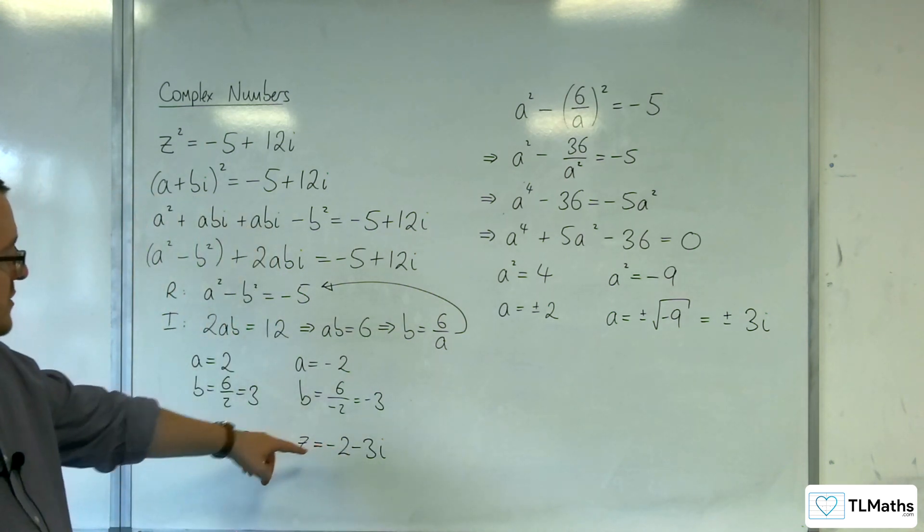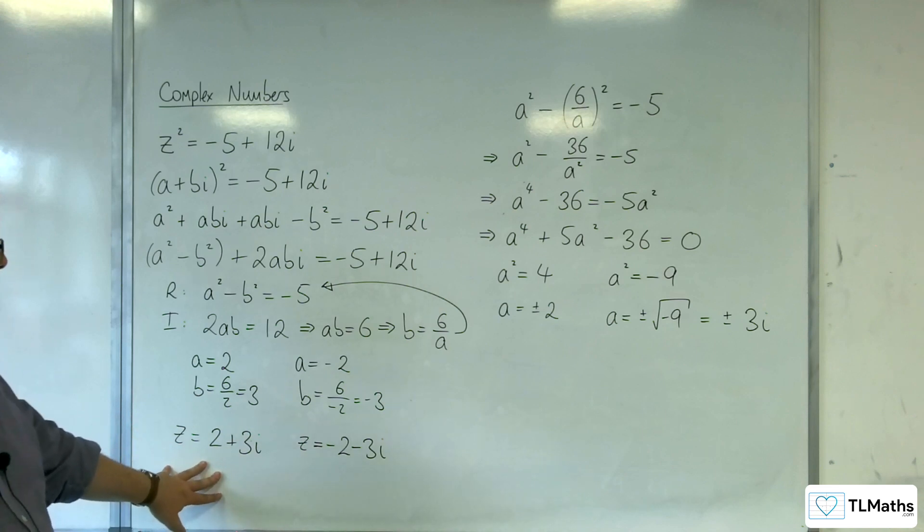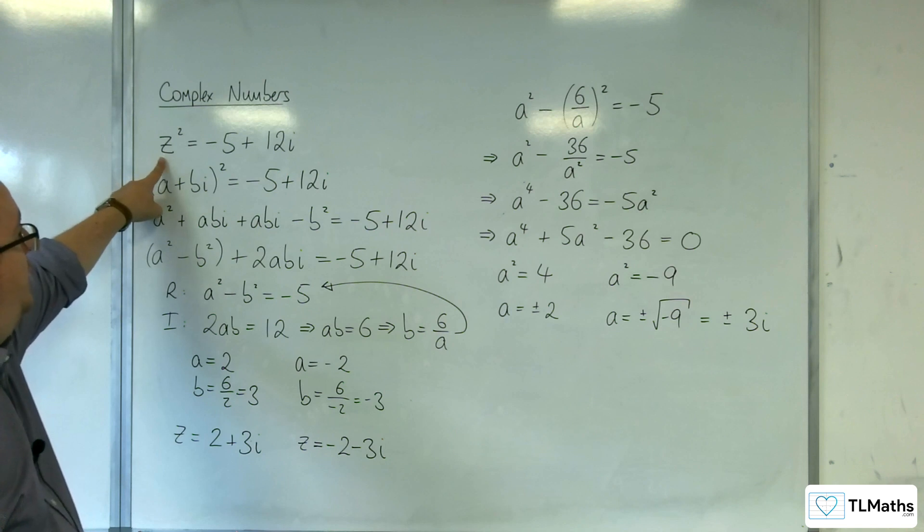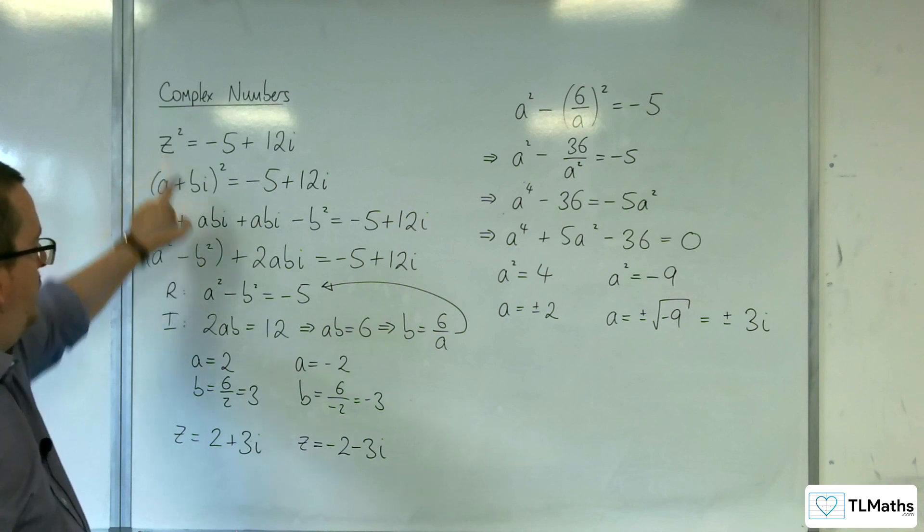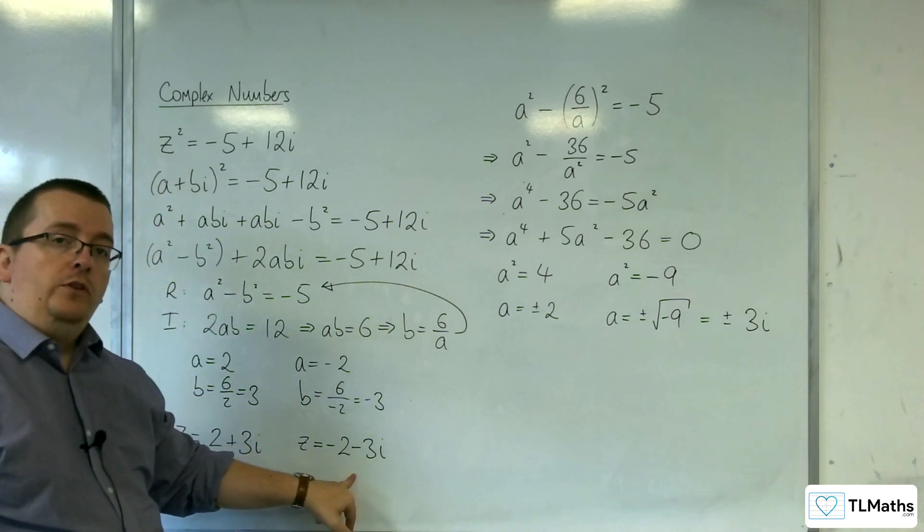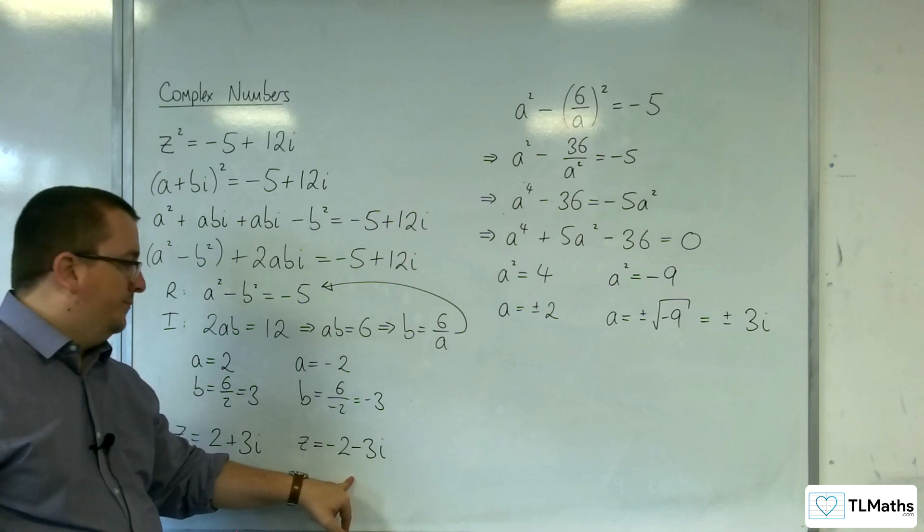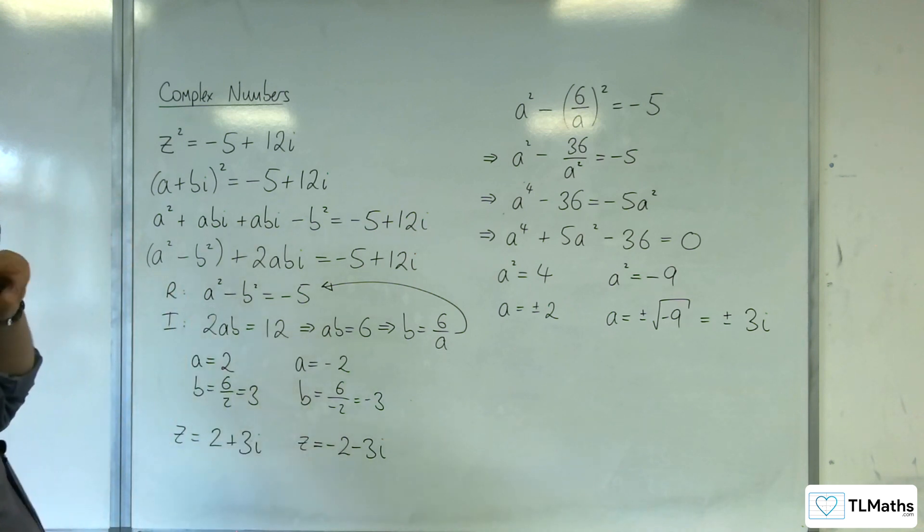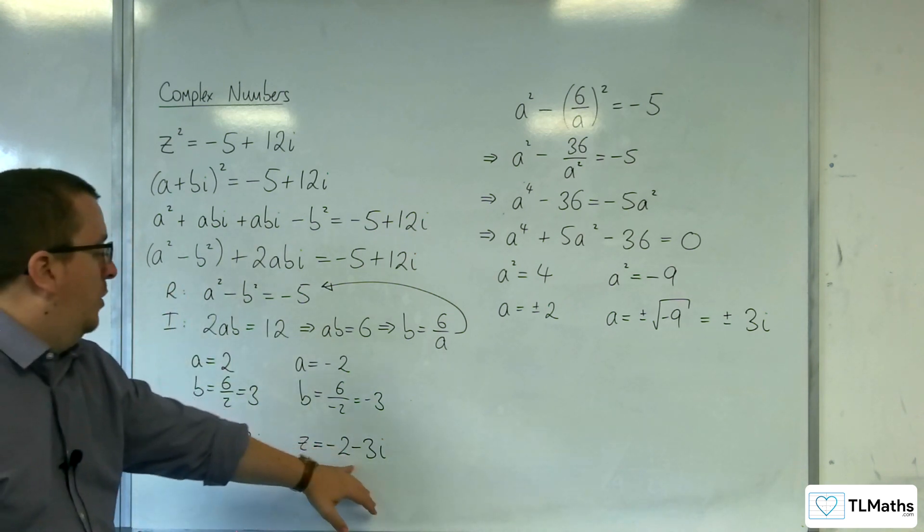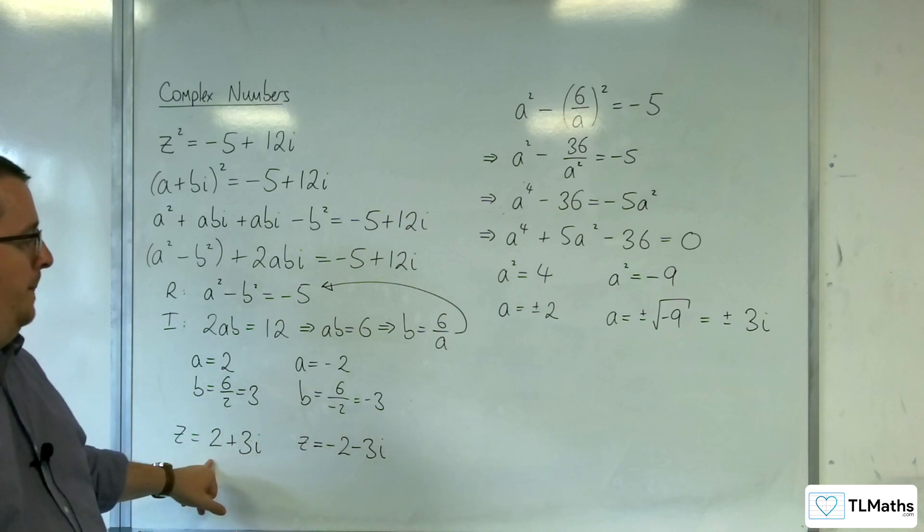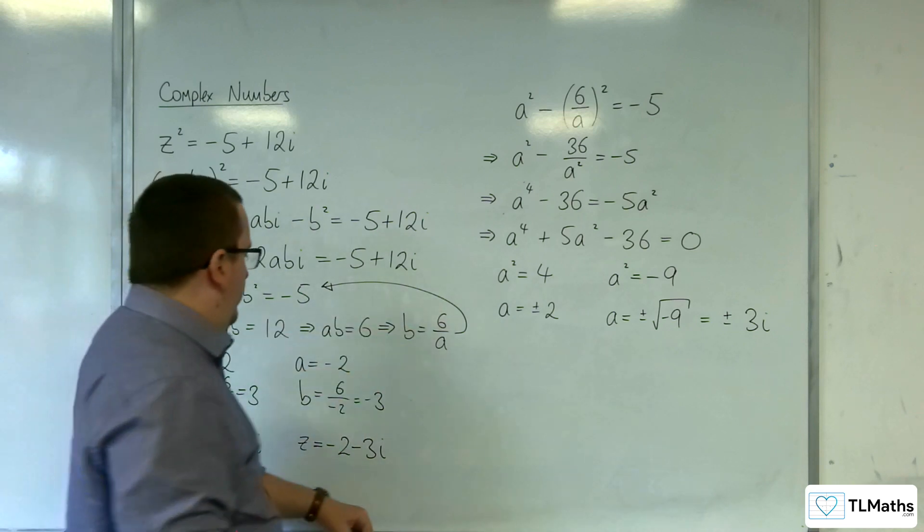So, this one is just the negative of that one, which is kind of making sense, right? Because you've got the z² here. So, if you square either of those, you're going to get exactly the same value. So, that's fine. So, we've actually got two possible roots here. But what about these other ones?